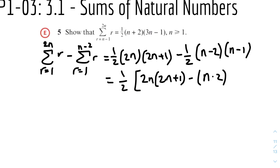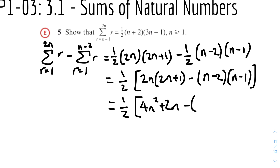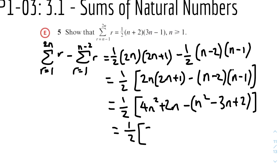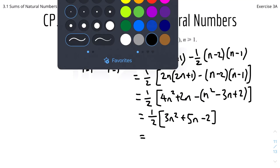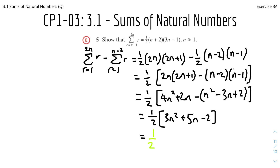The second sum is half times n minus two times n minus one. Factorizing out a half: half times [2n(2n+1) minus (n−2)(n−1)]. Expanding the brackets gives 4n² plus 2n, minus n² minus 3n plus 2, wait — minus n² plus 3n minus 2. Simplifying: 4n² minus n² is 3n², and 2n plus 3n is 5n, minus 2. We then factorize the quadratic to get half times n plus two times 3n minus one, which is the required expression.